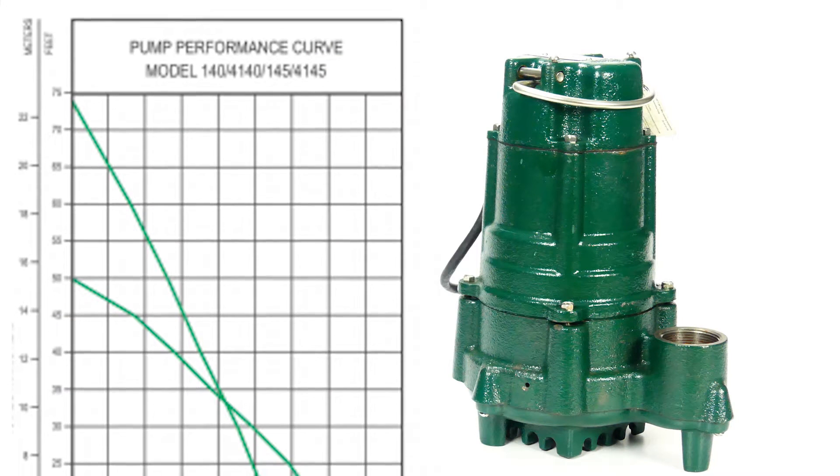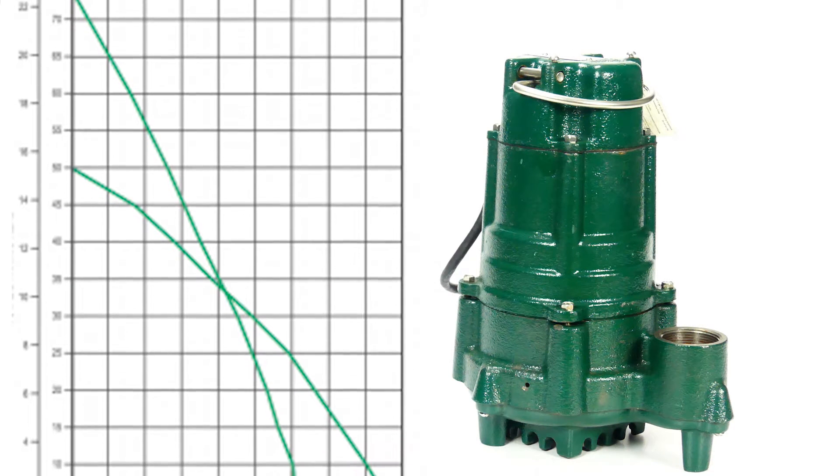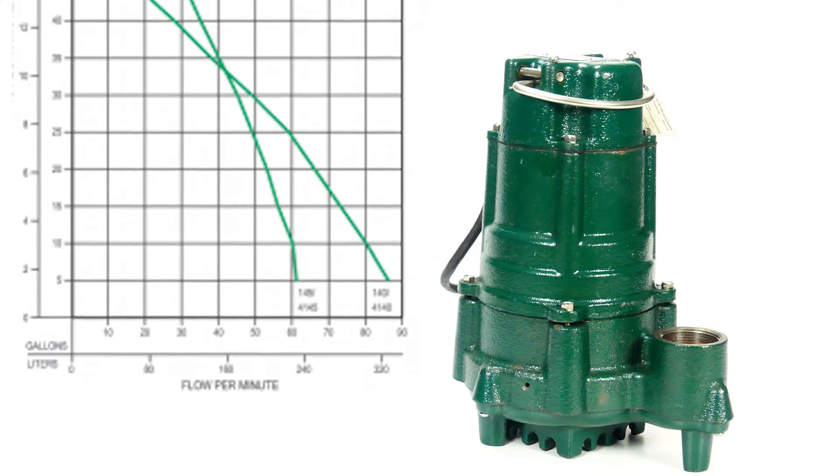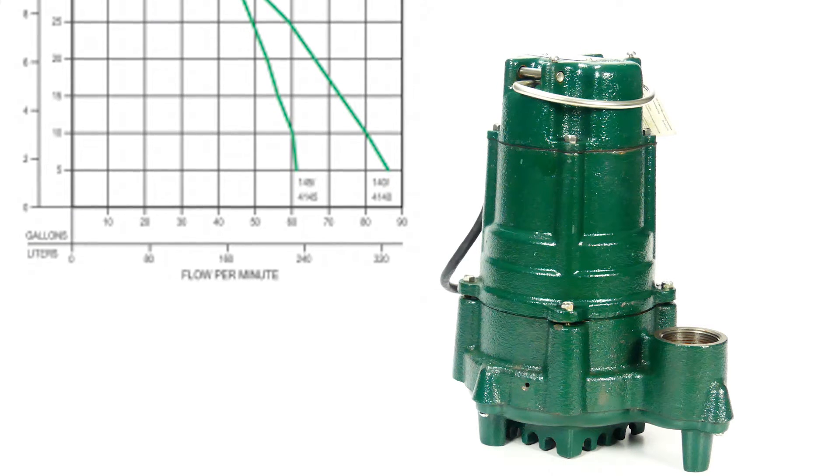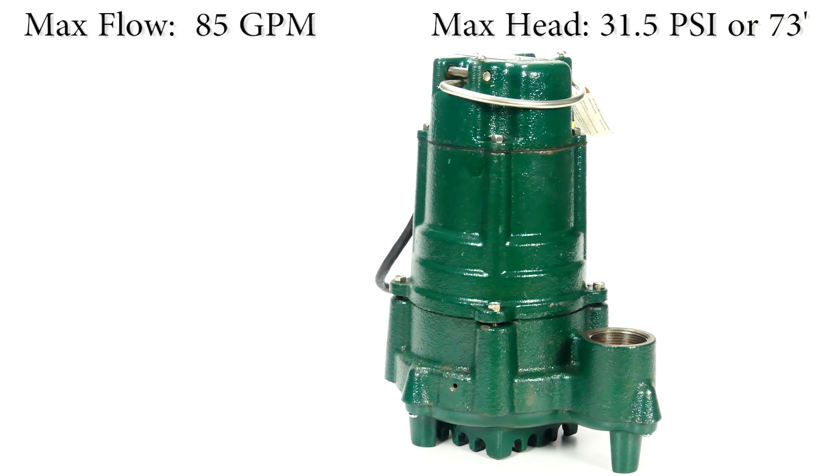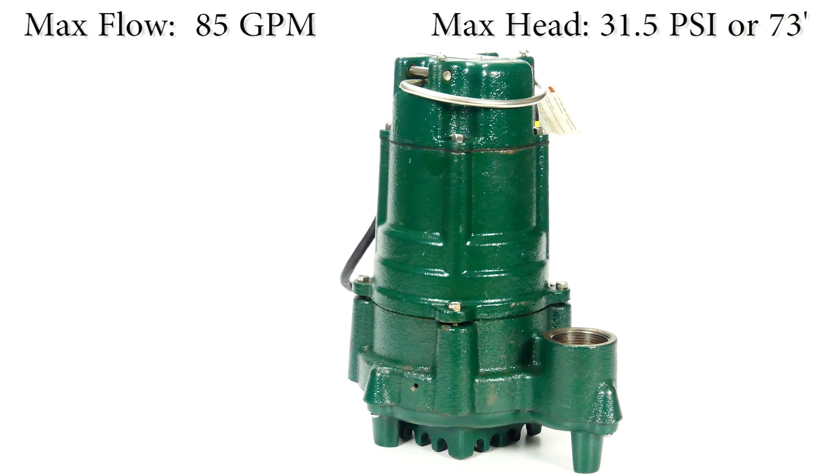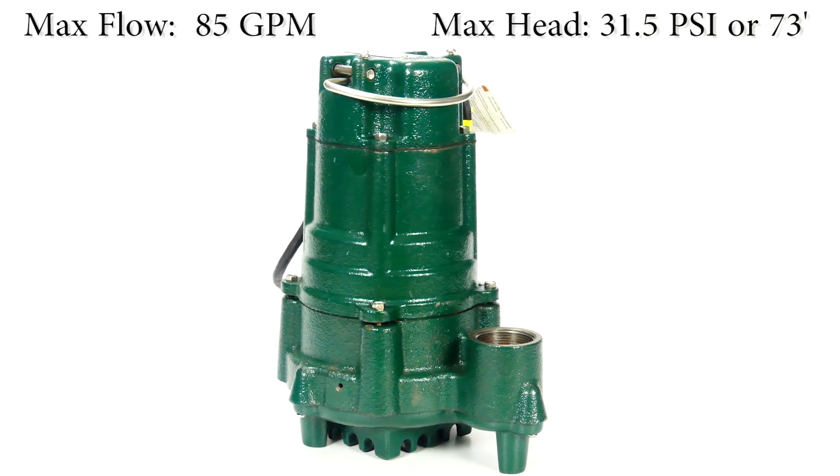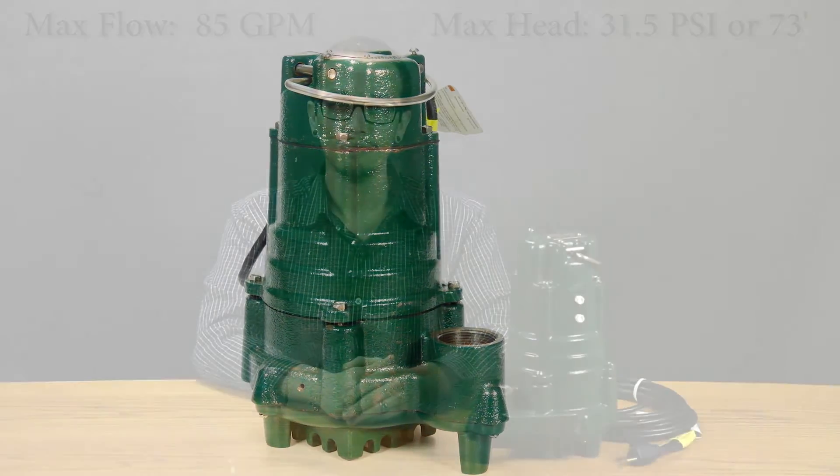This series is capable of producing a maximum flow rate of about 85 gallons per minute and has a shutoff pressure of approximately 31.5 psi or 73 head feet. As with every Zoller pump, these are 100% pressure tested, submerged, and run before they leave the factory floor to ensure quality and reliability for years of trouble-free performance.